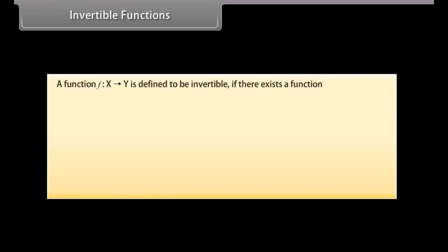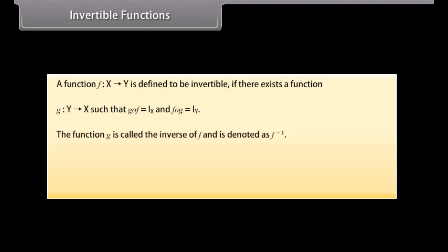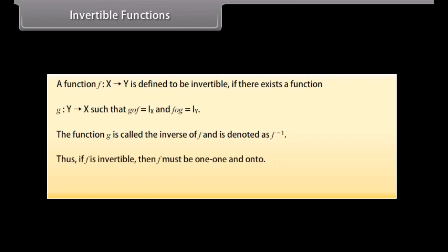Invertible functions: A function f from X to Y is defined to be invertible if there exists a function g from Y to X such that g∘f = I_X and f∘g = I_Y. The function g is called the inverse of f. Thus, if f is invertible, then f must be one-to-one and onto. Conversely, if f is one-to-one and onto, then f must be invertible.